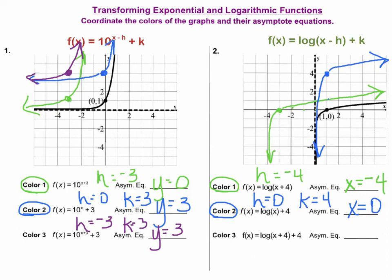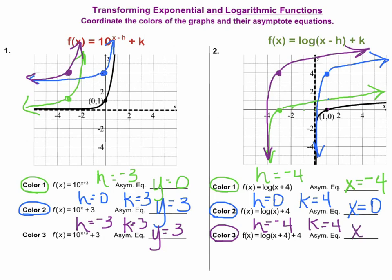Now let's move to our third example for transforming a log function, and I will do it in purple. I have f of x equals log of (x plus 4) plus 4. Here I have an h value of negative four and a k value of positive four. I start from my key point of (1, 0), move to the left four units, and then move up four units. That will be my new key point, and from here I will draw my curve. The equation for my asymptote will be x equals negative four.